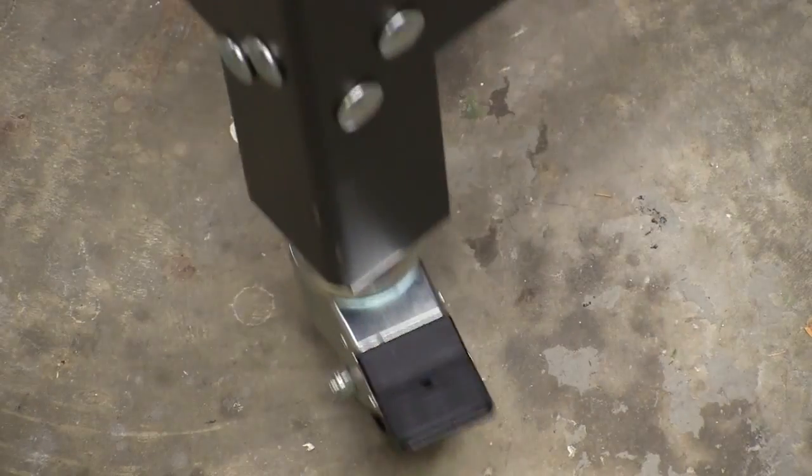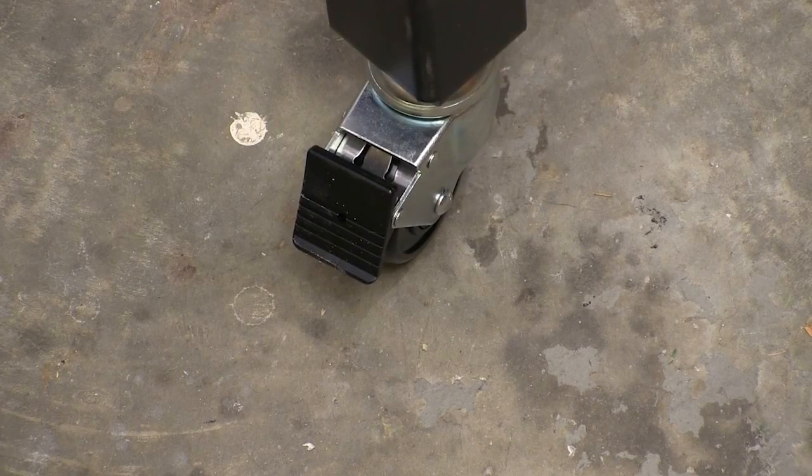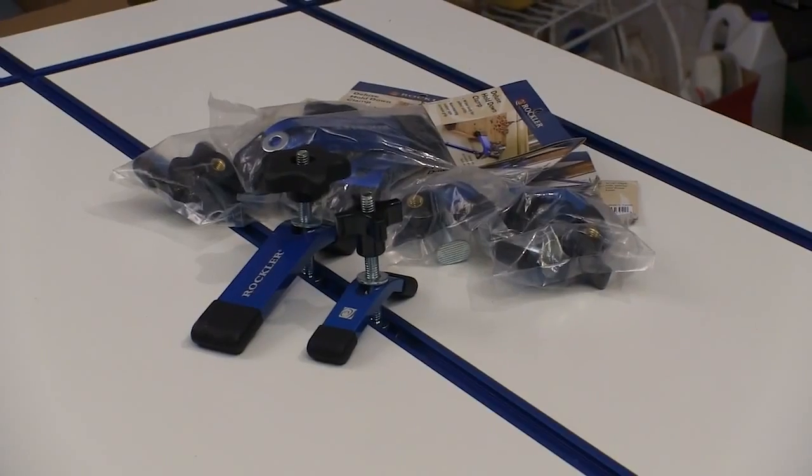These casters roll and swivel around very easily so you can put the table where you want it. And then when you don't want it to move anymore, step on that and it locks the wheel and the swivel together. When you want to move again, flip that lever back up and away it goes.